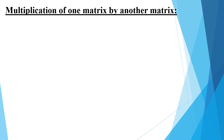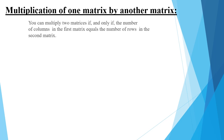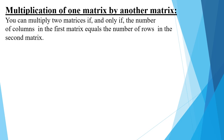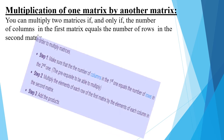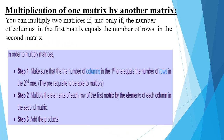For multiplication of one matrix by another matrix, you can multiply two matrices if and only if the number of columns in the first matrix equals the number of rows in the second matrix. The steps are: first, make sure the number of columns of the first matrix equals the number of rows of the second matrix. Second, multiply the elements of each row of the first matrix by the elements of each column of the second matrix. In the last step, add the products.